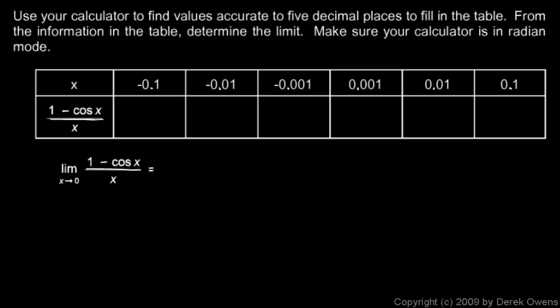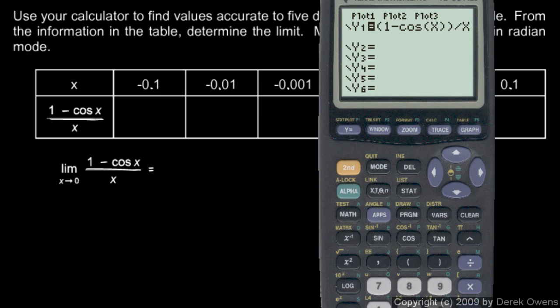Now the easiest way to get these numbers will be to put this expression in as a function into the calculator and use trace. And we're told to use the calculator, so let's pull up the calculator here. And I have it typed in for y1, 1 minus cosine x over x. And we're in radian mode. If you're not told radians or degrees, assume radians. So 1 minus cosine x over x, and if we graph this,